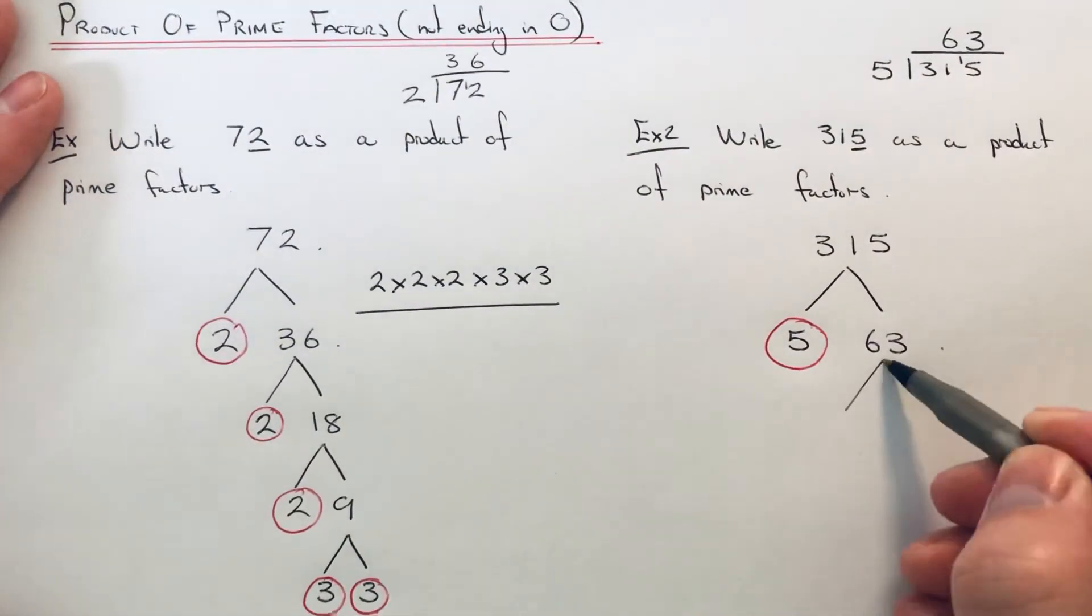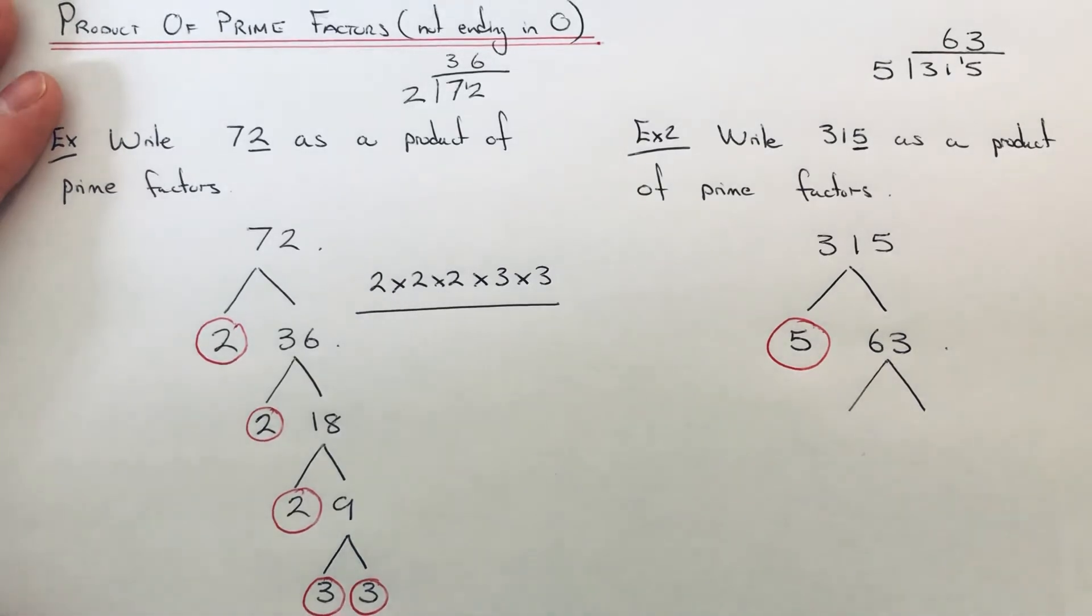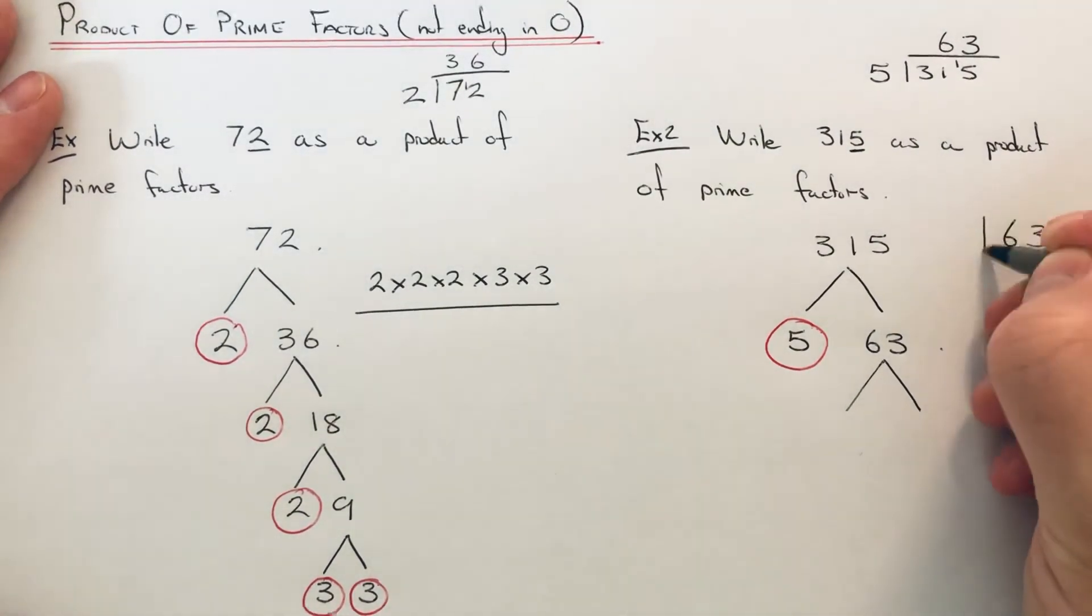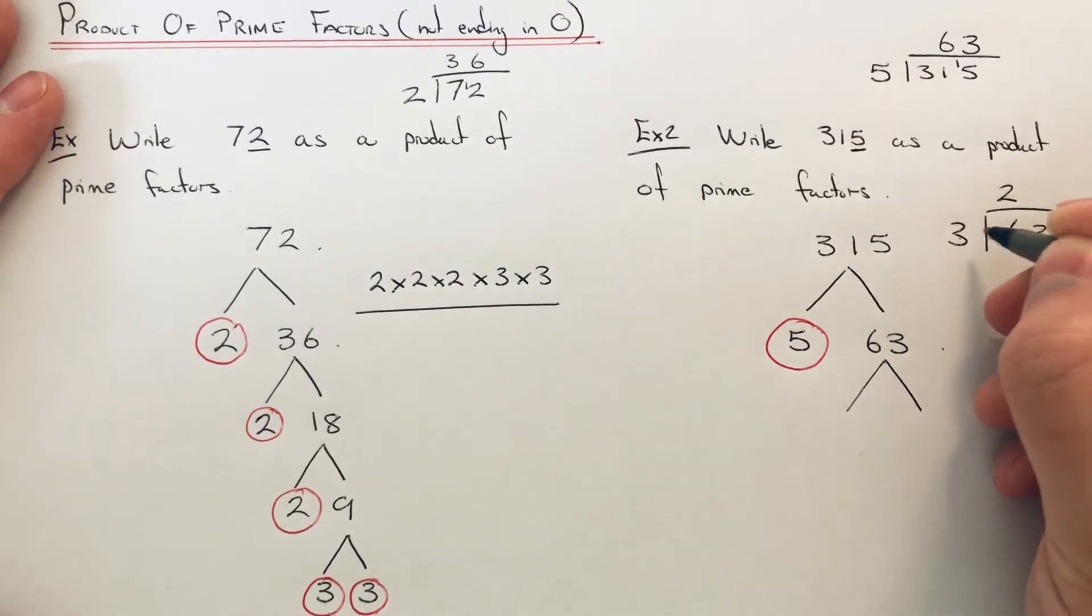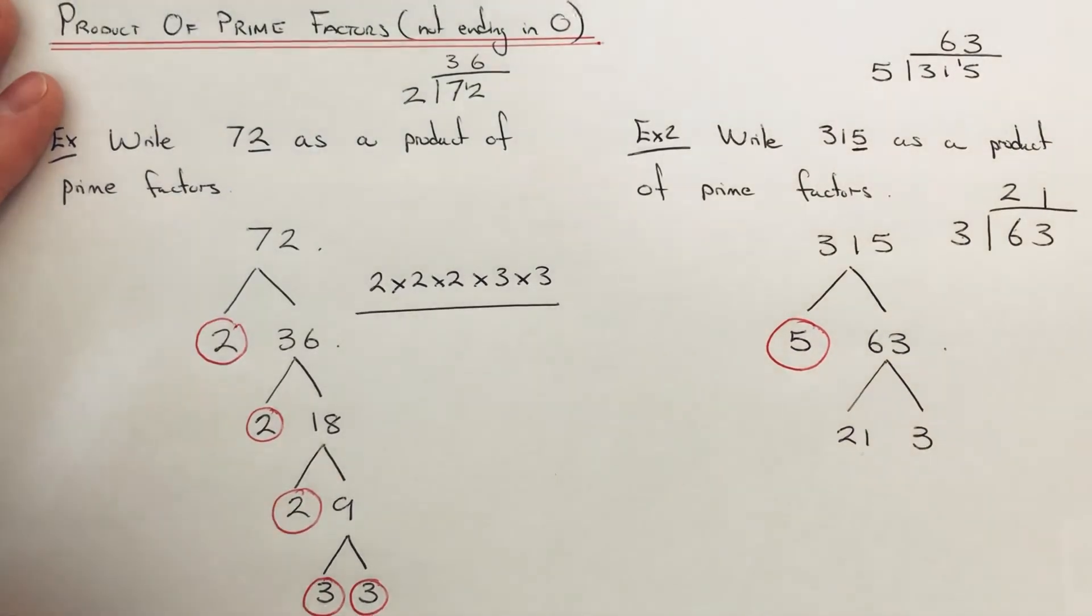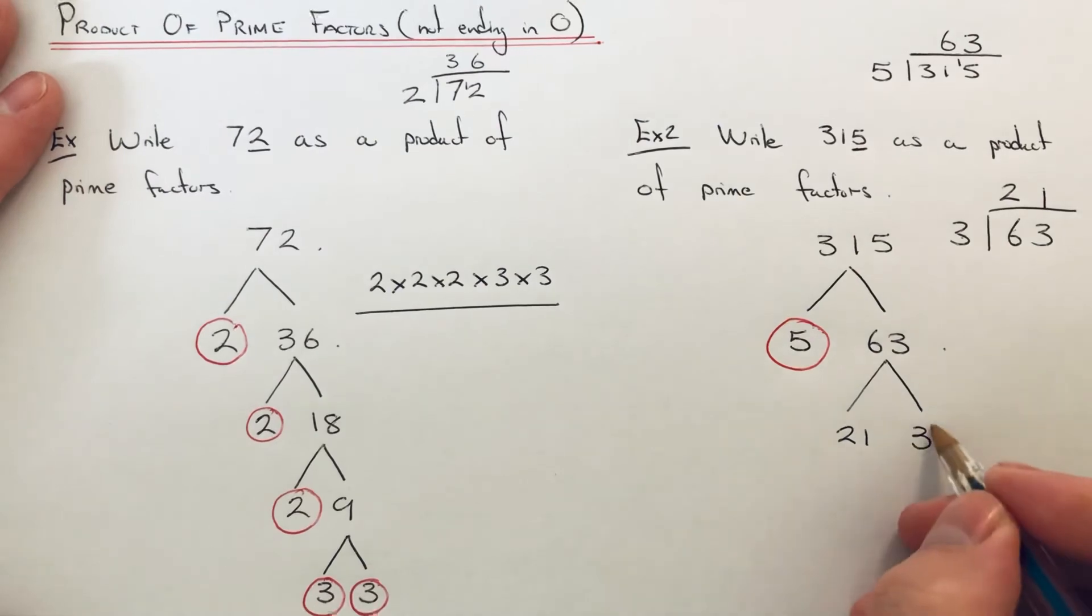I don't think 63 is a prime number because I think it's in the 3 times table. Let's just check that. 6 divided by 3 is 2, 3 divided by 3 is 1, so our next one is 21 times 3. 3 is prime.